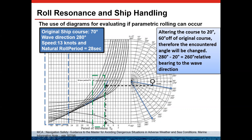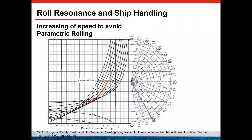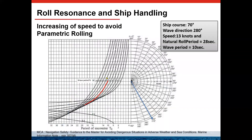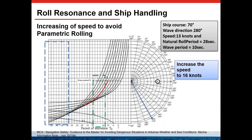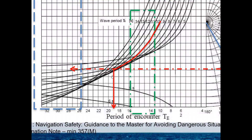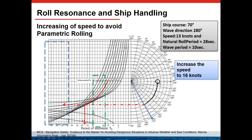Finally, we check whether increasing speed can avoid both parametric and synchronic rolling dangerous zones while keeping the original course. Keeping the wave period and entering the zones, we increase speed to 16 knots. Following the line and finding the intersection shows that by increasing speed from 13 to 16 knots — which is possible for this heavy lift vessel — we exit parametric rolling and do not enter synchronic rolling. This is also a valid option.